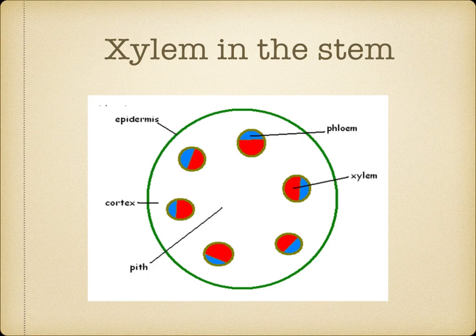In your notes, you need to have drawn this diagram — a section through the stem. Notice where the xylem is; it's towards the middle. Notice how the vascular bundle, so that's the xylem and phloem, are located around the stem towards the periphery.